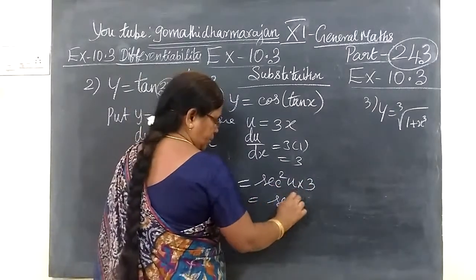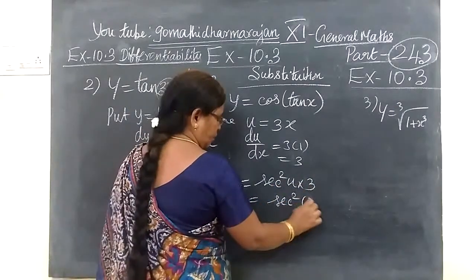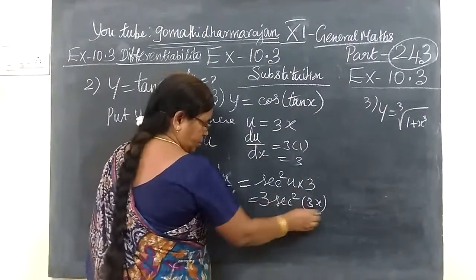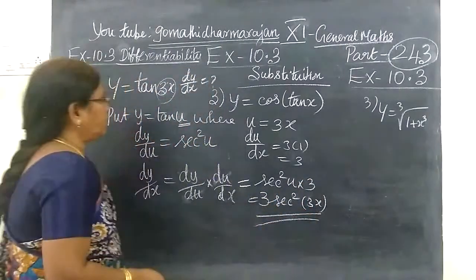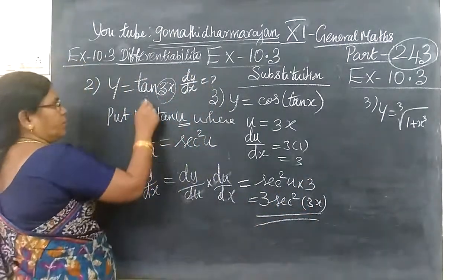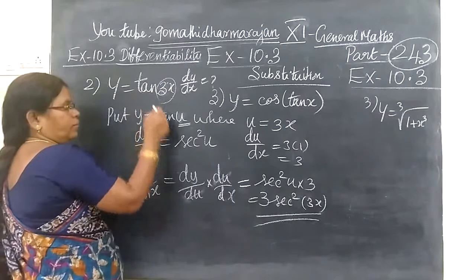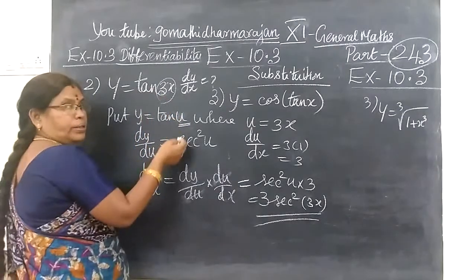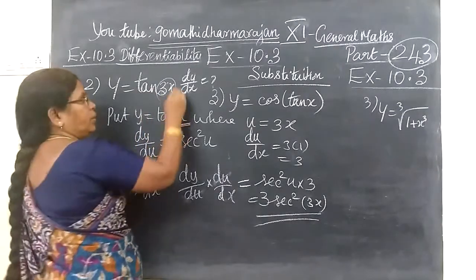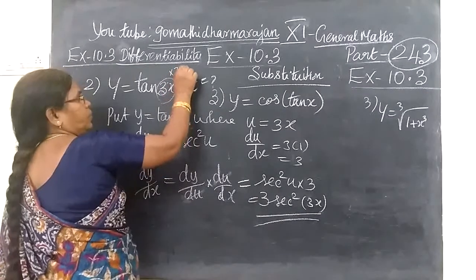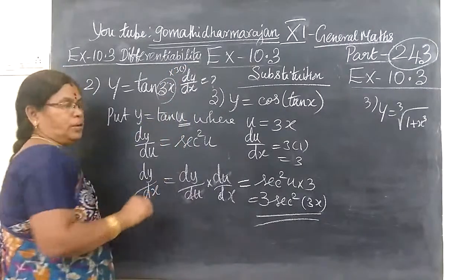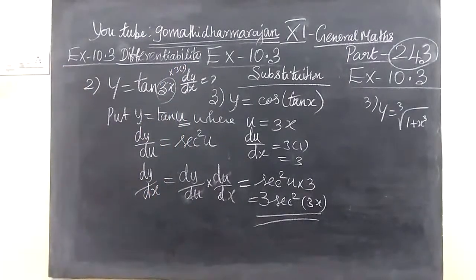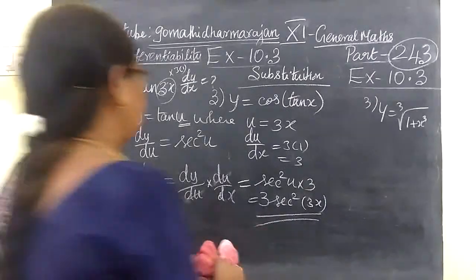Now u can be written as 3s. So directly at the end, we answer: the derivative is sec squared(3s) into the inner function derivative, which is 3 times 1. So coming to the next one.